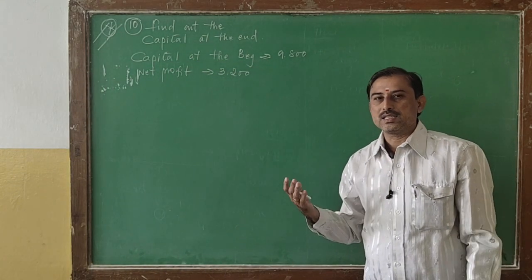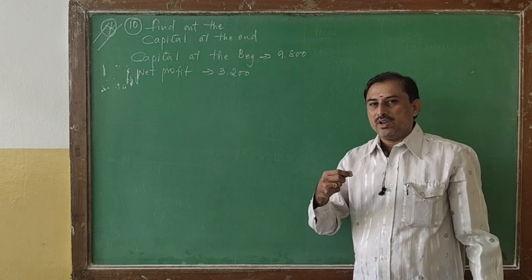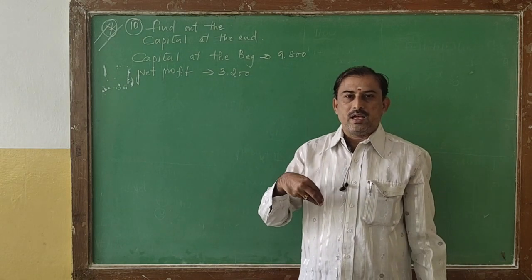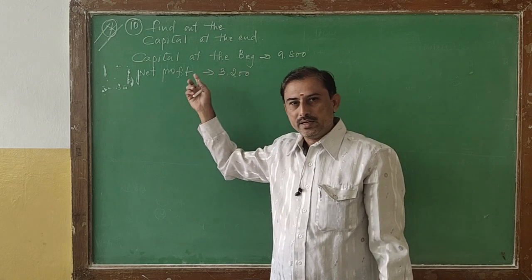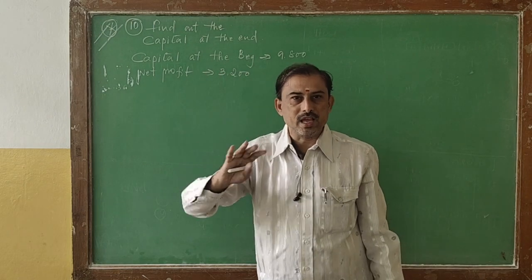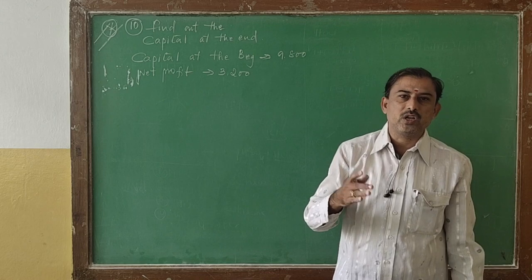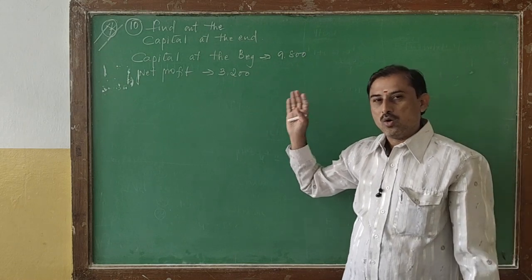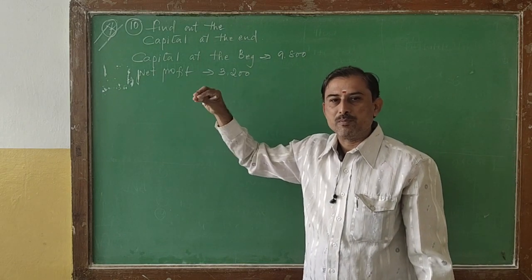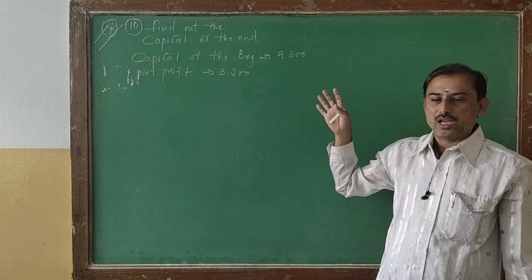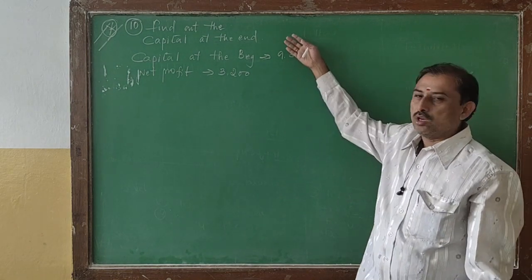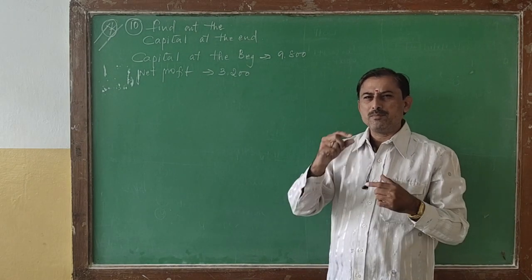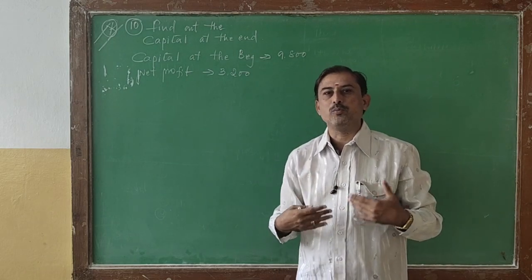Yesterday in the last class, we saw when capital at the beginning and capital at the end are given, they ask you to find out the profit. In some problems they give capital at the end, drawings, additional capital, and net profit or net loss, and ask you to find out some missing information. Today we will see one more type of problem — simple problems to practice.